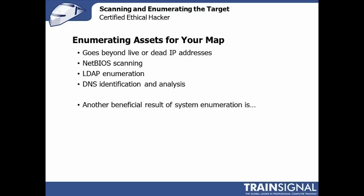Enumerating assets for the map goes beyond live or dead IP addresses. Ping sweeps are a basic starting point and used to work well, but enumerating assets now goes further — doing NetBIOS scanning, looking for NetBIOS information about hosts, identifying DNS information, doing a zone transfer (covered in a later video), and identifying systems based on that. This is about direct analysis of live hosts on the map, building all this information to launch later attacks or identify potential compromises.